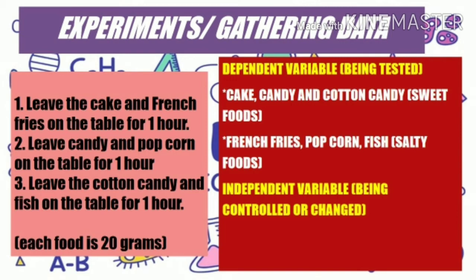The independent variables are the variables being controlled — the amount of food and the time. The amount of each food in the experiment is 20 grams, and the time is one hour. Remember that independent variables are the ones being controlled or changed. If you want the experiment to take longer, you can change the time. You can also change the amount of food.